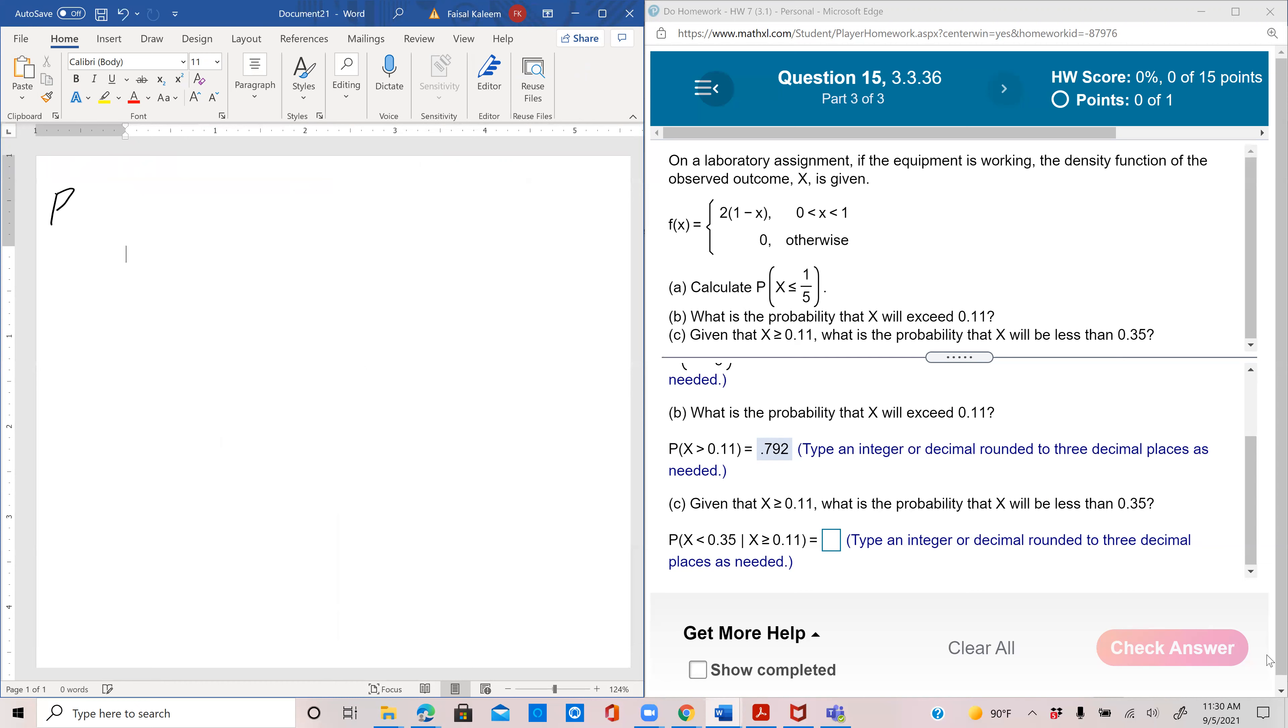So probability x less than 0.35 given that x is greater than or equal to 0.11, by our conditional probability formula, equals probability x less than 0.35 and x greater than or equal to 0.11, divided by probability x greater than or equal to 0.11. So we just applied the formula for probability A given B.